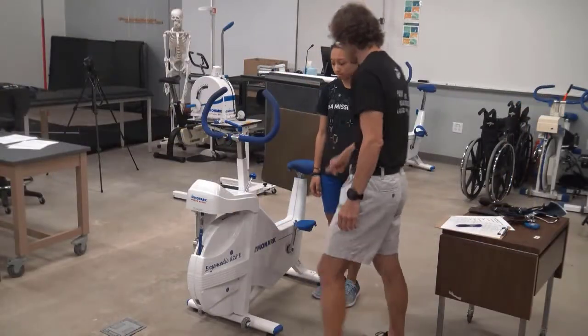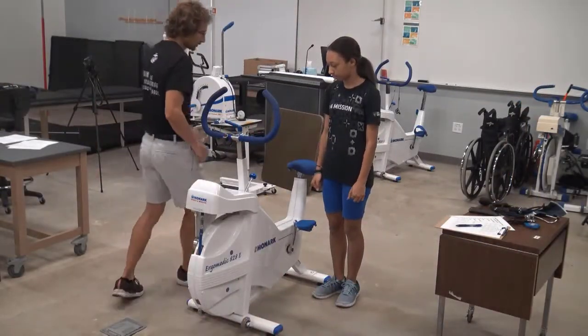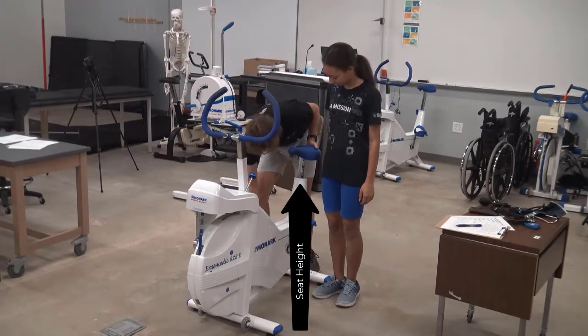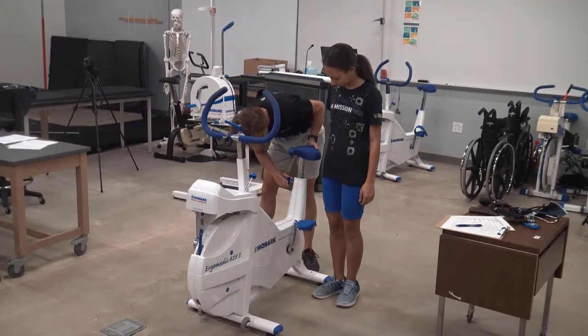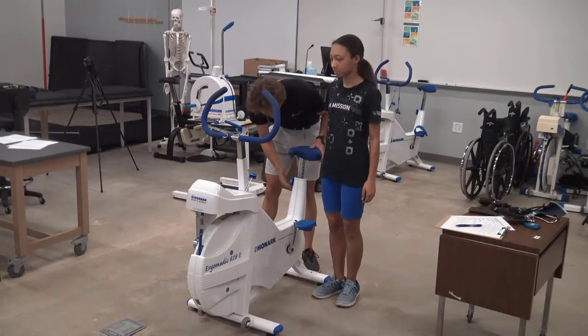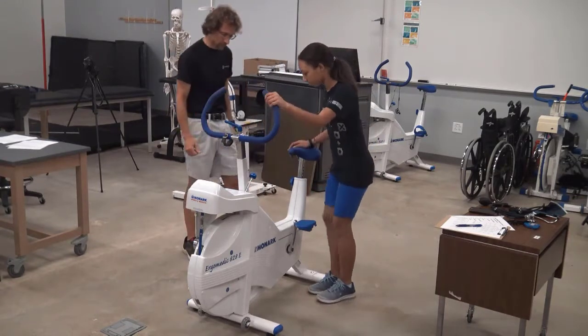Before having your client mount the bike, we have to first make sure they are fitted on it properly and this begins with adjusting the seat height. Have your client stand next to the bike and noting the height of the hips towards the iliac crest, adjust the seat level. Be sure the knob is securely fitted into the stem of the seat to avoid any kind of accident.